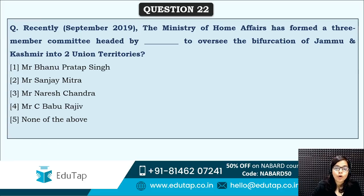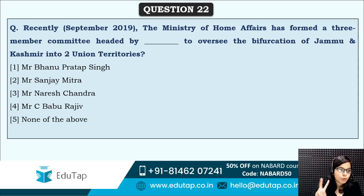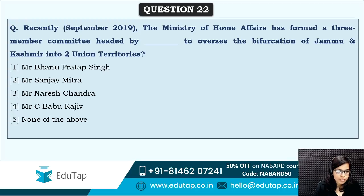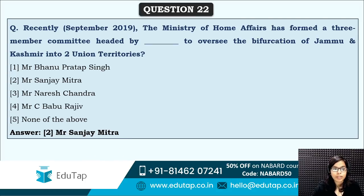Next: the Ministry of Home Affairs formed a three-member committee headed by which person to oversee the bifurcation of Jammu and Kashmir into two union territories? We all know J&K has been bifurcated into Ladakh and Jammu. A committee was formed to oversee this bifurcation. The name of the person is Mr. Sanjay Mitra, under whom this particular committee was formed.